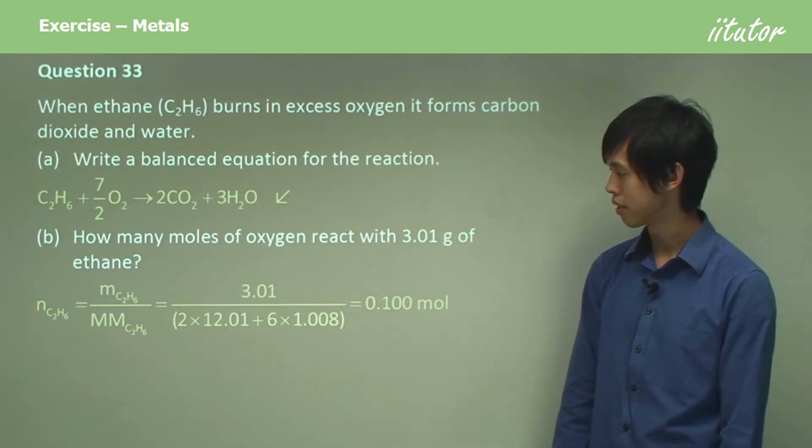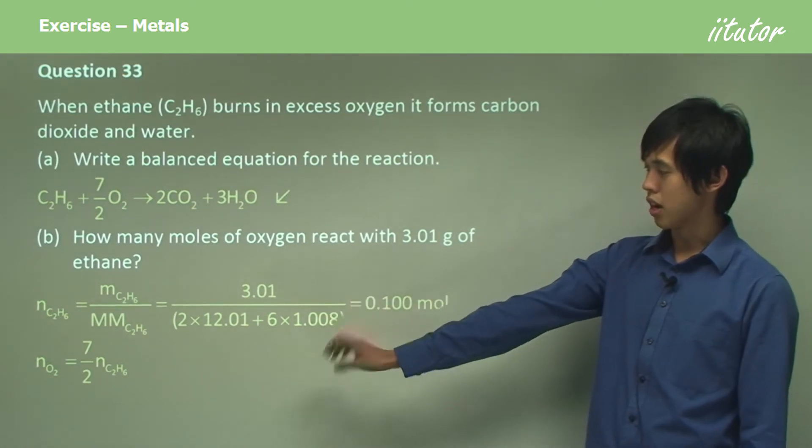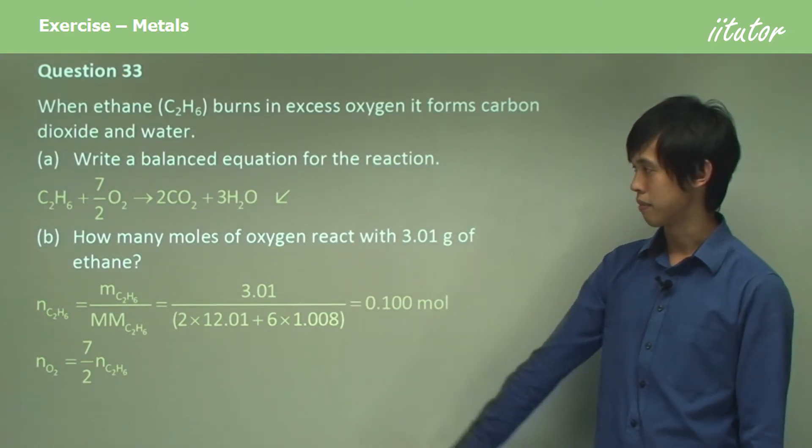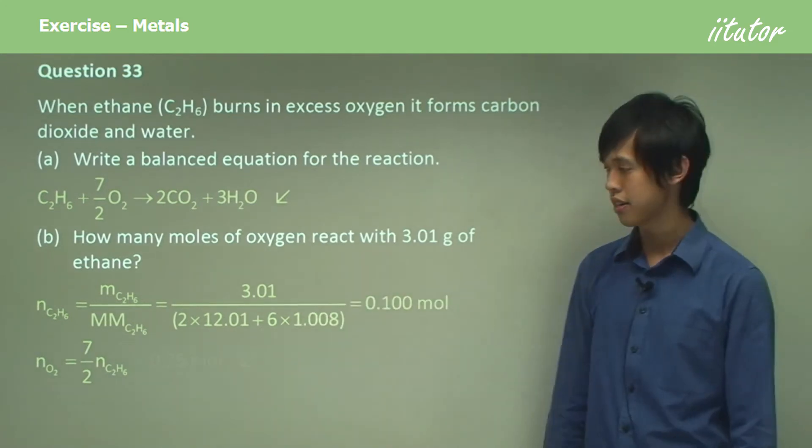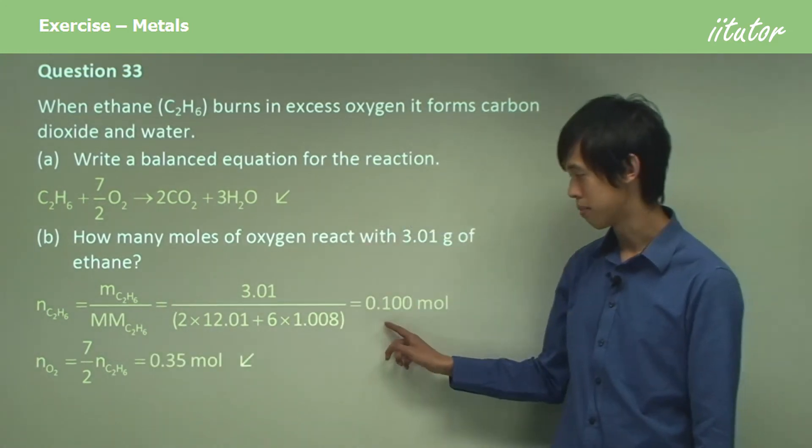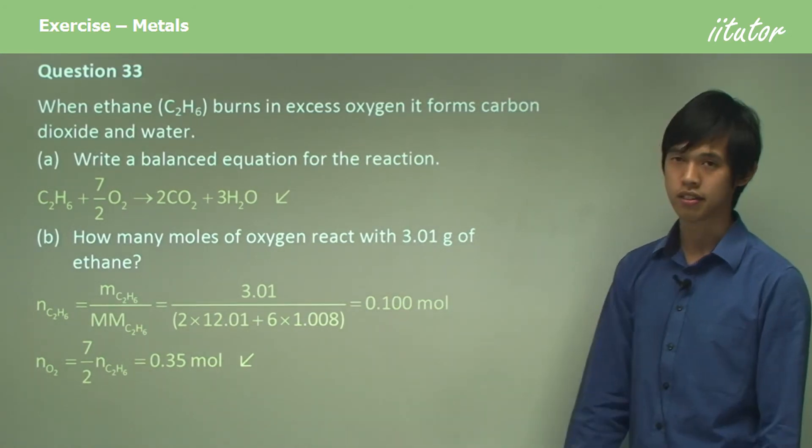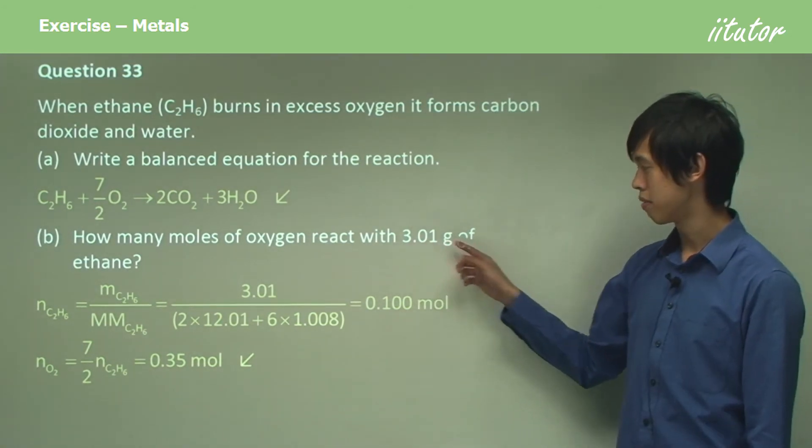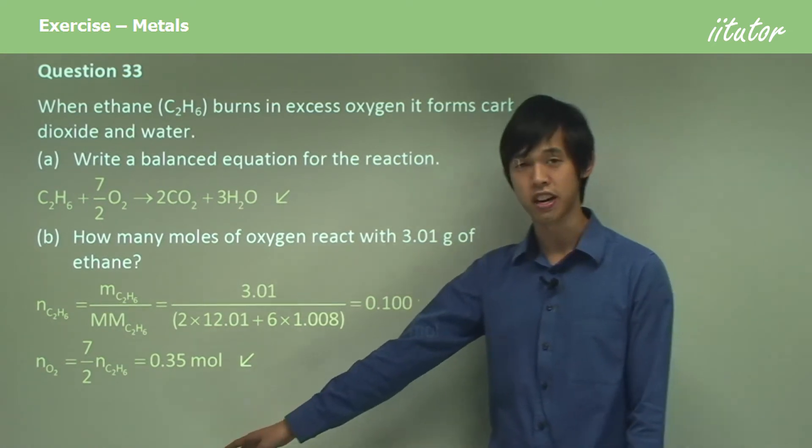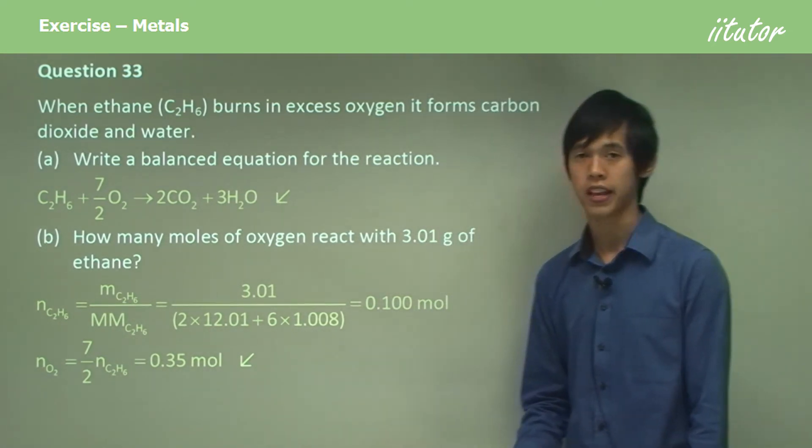It happens to be a very good number. So the number of moles of oxygen is seven on two times the number of moles of ethane, from here. So I just multiply this by seven on two, which is 0.35 moles. And that's our answer. For every 3.1 grams of ethane, we need 0.35 moles of oxygen gas.